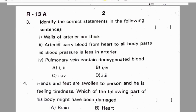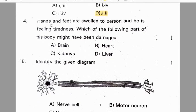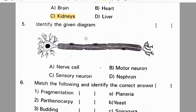Third question: identify the correct statement — walls of arteries are thick, arteries carry blood from the heart to all parts of the body, blood pressure is less in arteries, pulmonary veins contain deoxygenated blood. Correct option is D: statements 1 and 2 are correct. Fourth question: hands and feet are swollen and a person is feeling tiredness — the part of the body that might have been damaged is the kidneys.